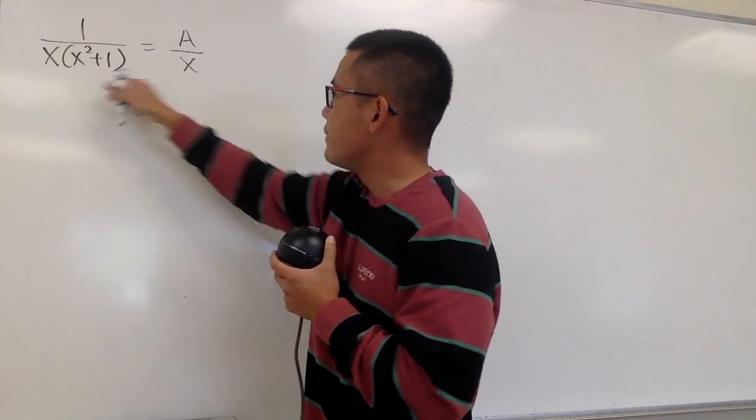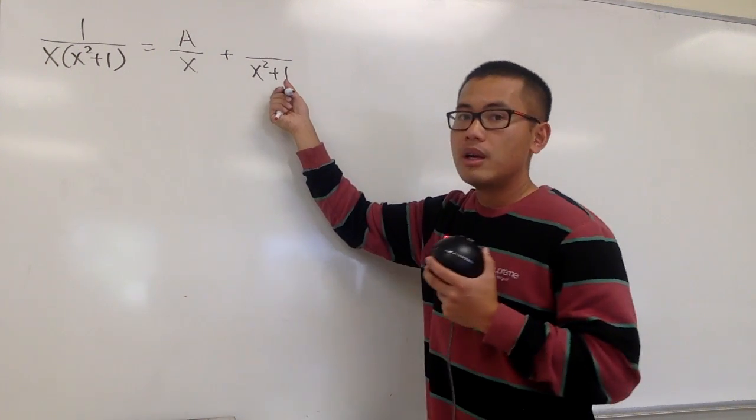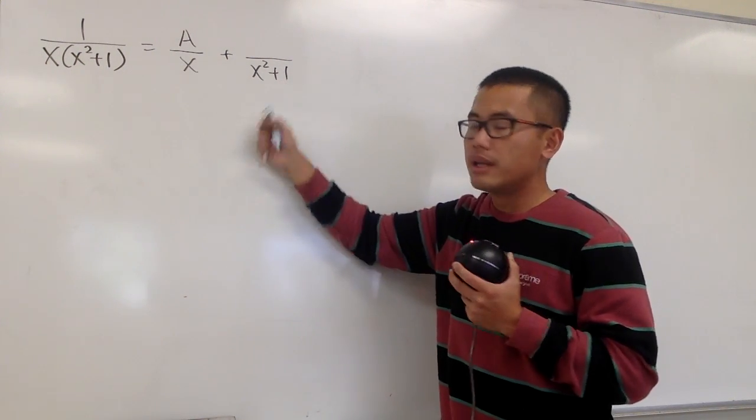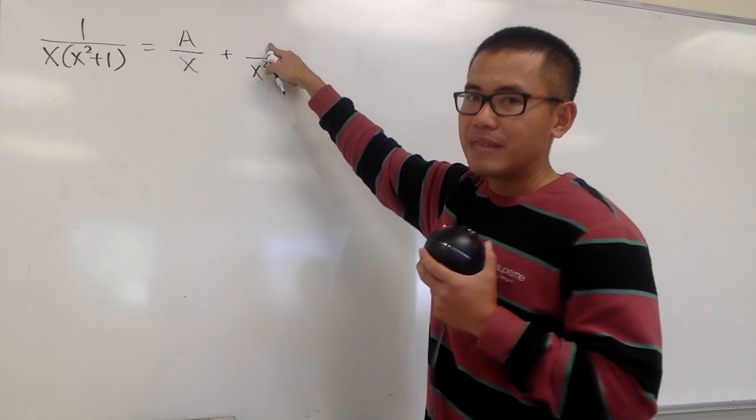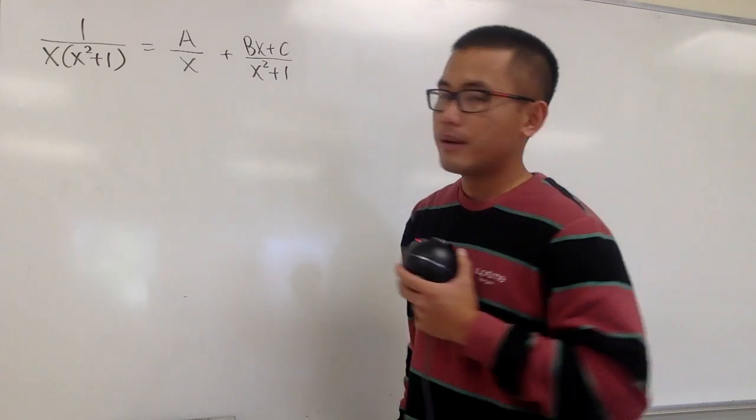And then, for the quadratic factor, we'll just keep it as how it is on the bottom, since we cannot factor it anymore. We have the x squared plus 1, but on the top, we must have a linear setup. So, I'll put down bx plus c.